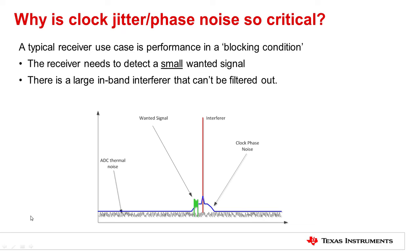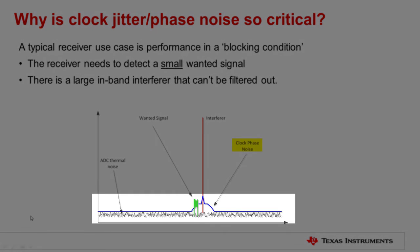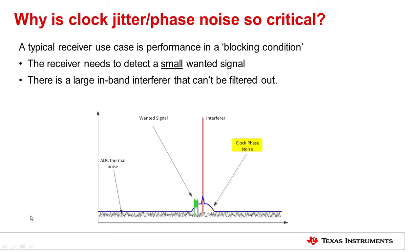As can be seen in the picture below, the clock phase noise gets modulated onto the full-power interferer and the clock phase noise starts to directly limit how small a wanted signal can be detected. As the input frequency or the clock phase noise increases, so does the combined noise floor of the ADC. This makes it harder and harder to detect small, wanted signals.